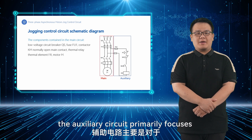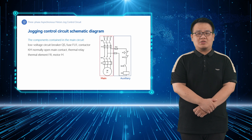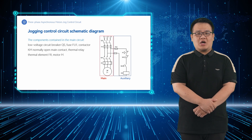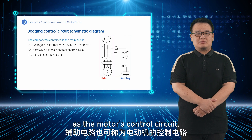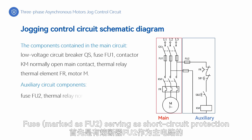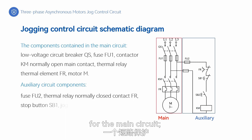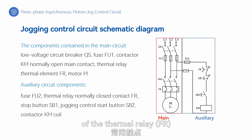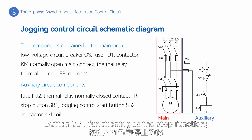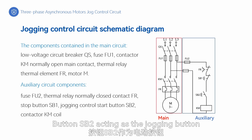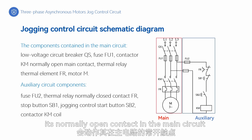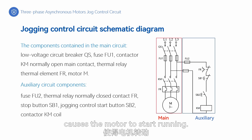The auxiliary circuit primarily focuses on controlling the motor and can also be referred to as the motor's control circuit. In the control circuit, it begins with fuse FU2 for short circuit protection, followed by the normally closed contacts of the thermal relay FR acting as overload protection, button SB1 functioning as the stop function, and button SB2 acting as the jogging button to control the circuit startup. Finally, the coil of contactor KM, when energized, causes its normally open contact in the main circuit to close, causing the motor to start running.